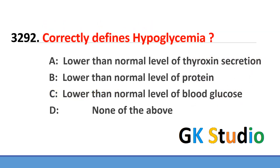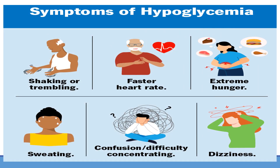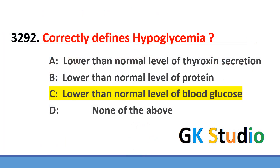Hypoglycemia — its symptoms include faster heart rate, extreme hunger, dizziness, and shaking or trembling. It is actually a lower than normal level of blood glucose, which is called hypoglycemia.